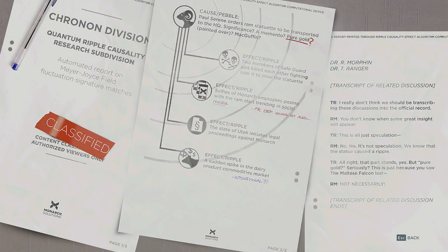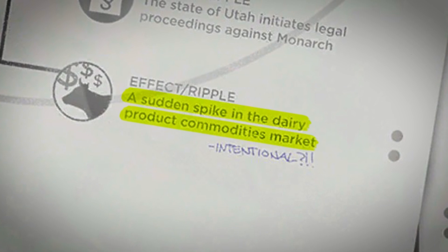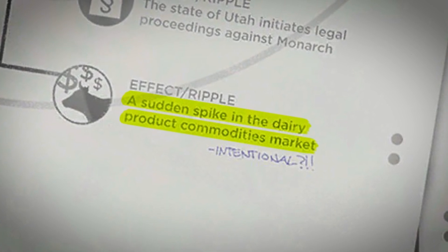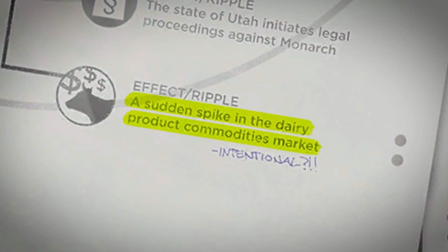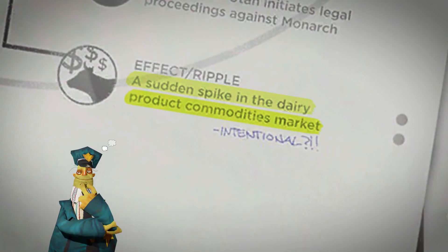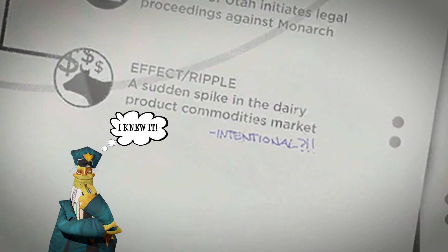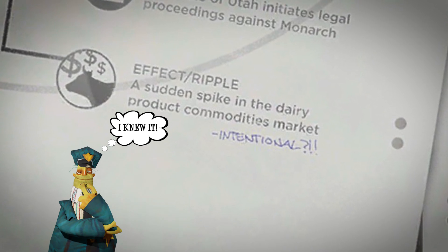The entire quantum ripple is easy enough to link together, except for one thing: how a spike in the dairy product commodities market could have occurred as a result of the statue is completely unknown. While there is no apparent link, there must be a connection somewhere.